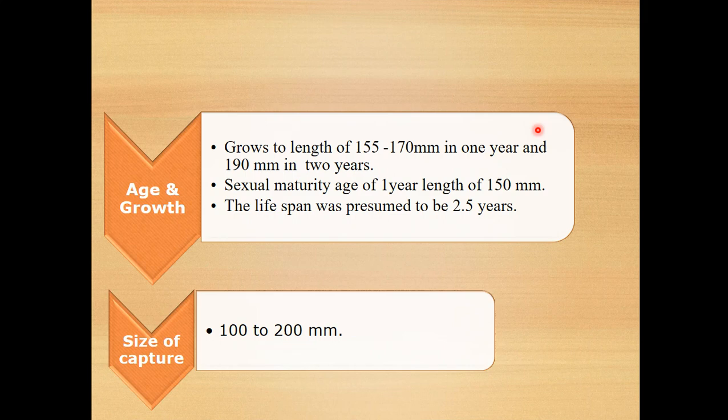About age and growth — covering all biological points including external characters, reproduction, food and feeding, and age and growth: the oil sardine grows to a length of 155–170 mm in one year and 190 mm in two years. Sexual maturity is reached after one year, at about 150 mm. Its life span is 2.5 years. The size at capture is 100 to 200 mm.